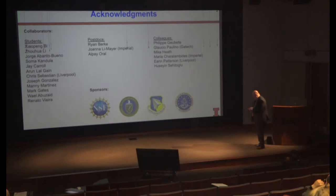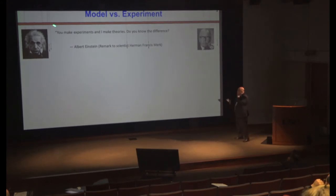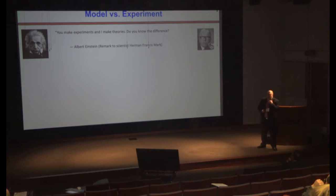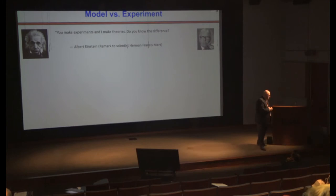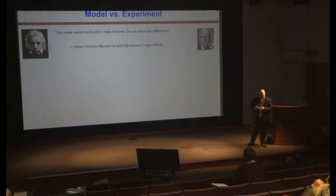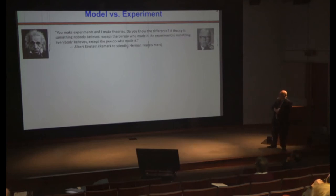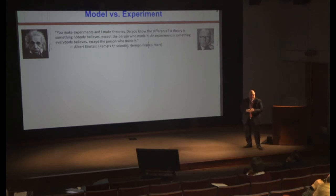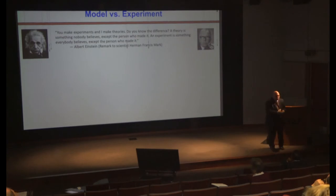Let me start with some quotes similar to what Robby had. I'll start with a discussion between Albert Einstein and Herman Mark, who was a physicist and experimentalist doing a lot of X-ray diffraction experiments, trying to experimentally show the Compton effect. Einstein had a vested interest in these experiments working out, and this is the well-known quote: theory is something nobody believes except the person who made it, and an experiment is something everyone believes except the person who conducted it — because they know all the secrets, problems, and issues behind it.